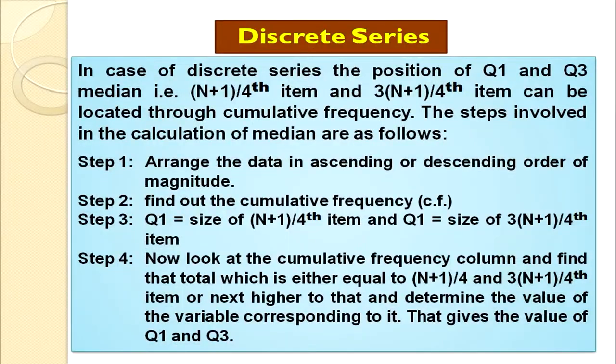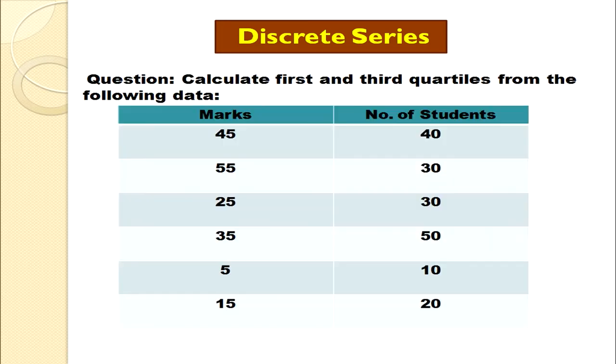To summarize the four steps for discrete series: first, arrange the data; second, make a column for cumulative frequency; third, find the values for Q1 as (n+1)/4th item and Q3 as 3(n+1)/4th item; and fourth, locate the item value in the cumulative frequency — the corresponding value gives Q1 and Q3. Let us take an example to understand.